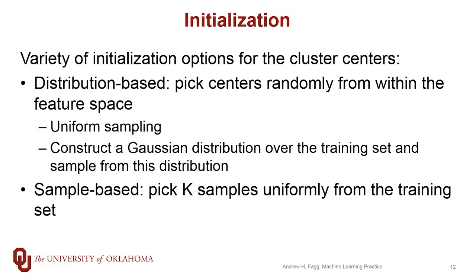The initialization process varies depending upon the implementation of the algorithm. We can take a distribution-type approach or a sample-based approach. With the distribution approach, one possibility is that we just pick our centers using uniform sampling within the feature space. Another possibility is that we construct a Gaussian distribution over all of our samples in our training set and then sample from it to pull out our centers.